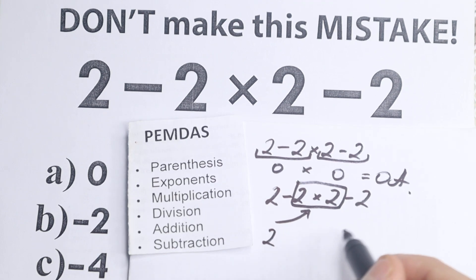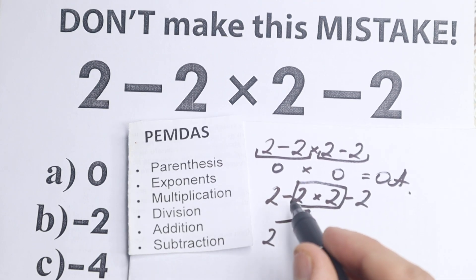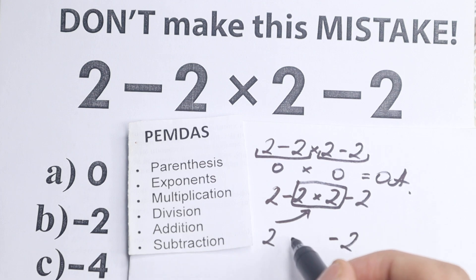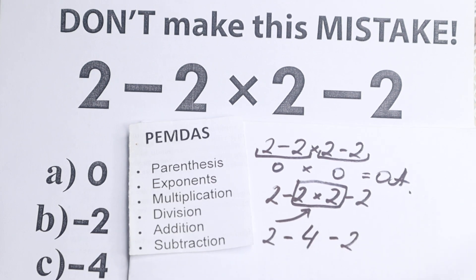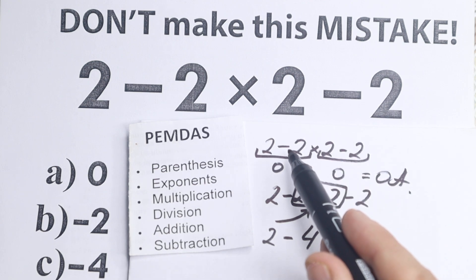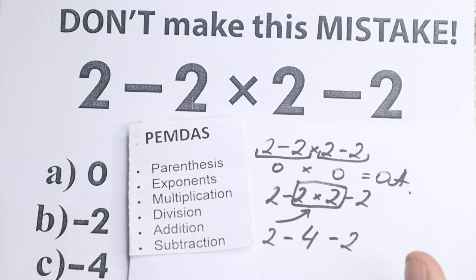So we need to start with this multiplication. We have 2 and -2 at the end. And right here, 2 × 2 equals 4. So we have -4. This is the main, most common mistake.